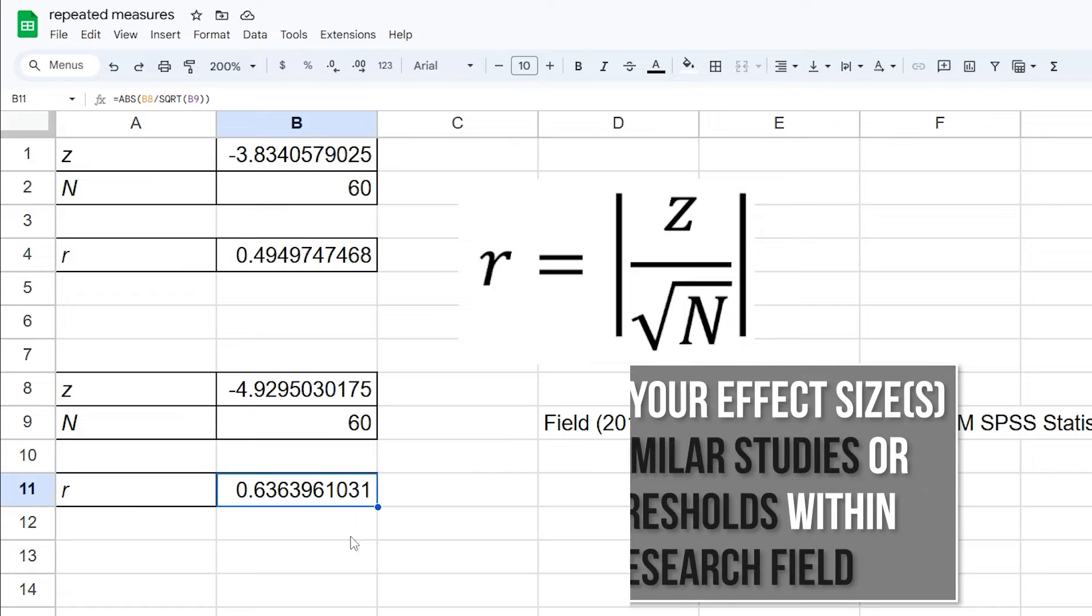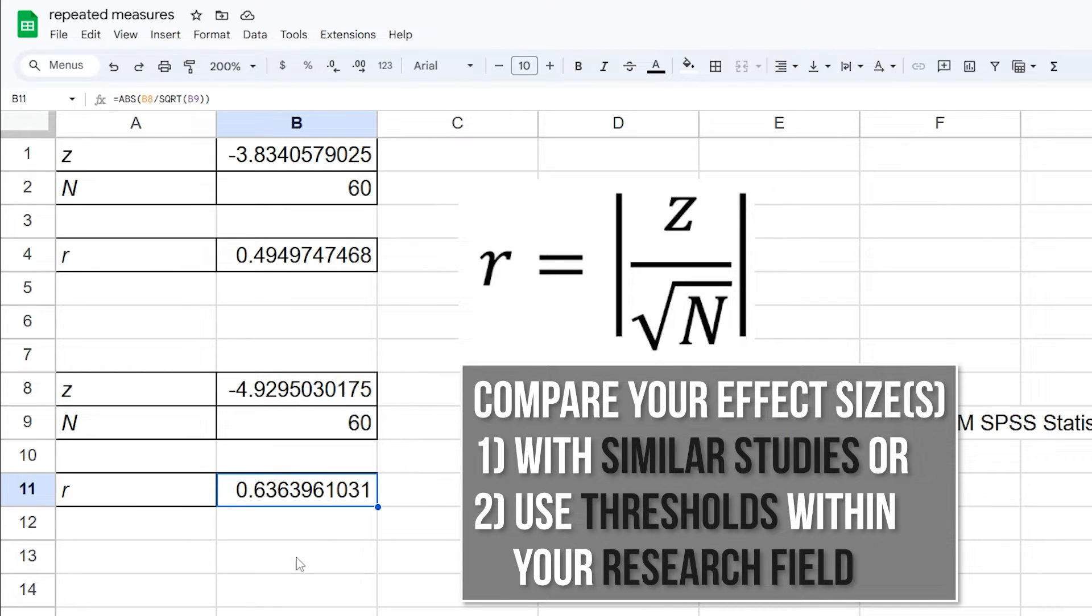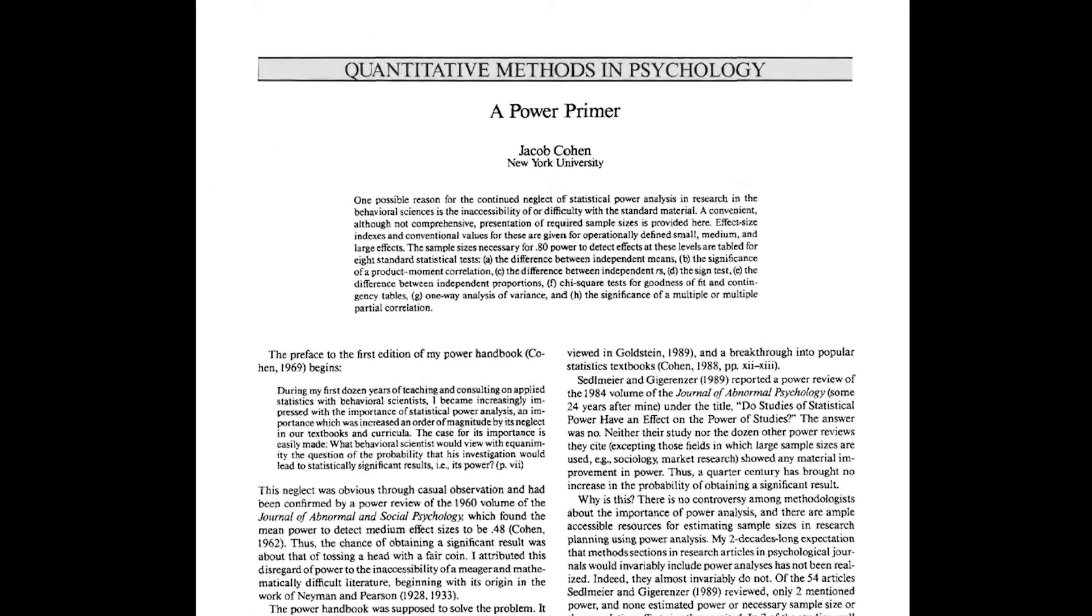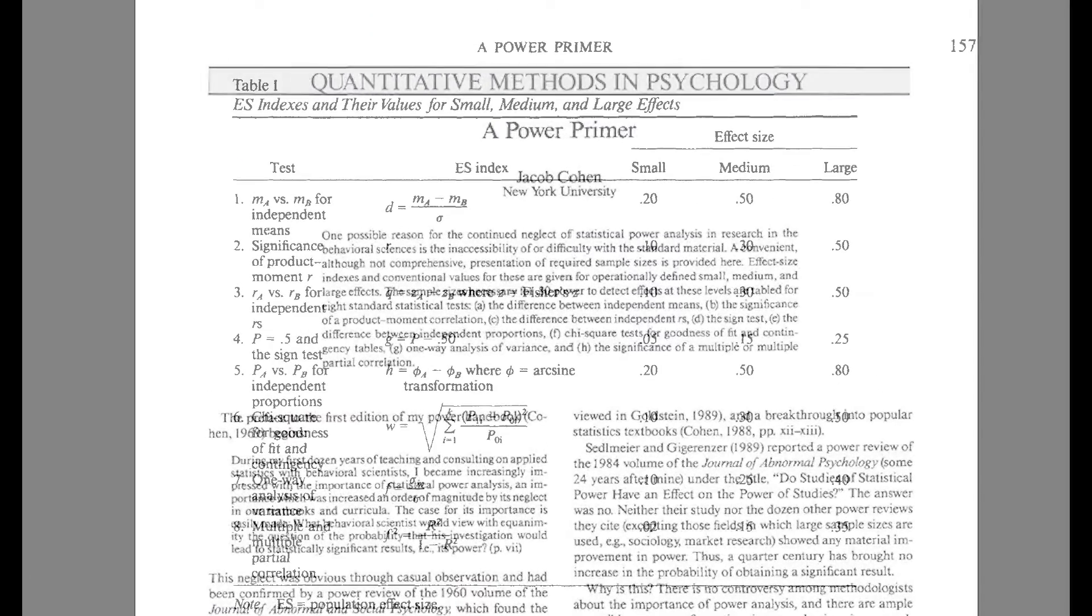If similar studies in your research field exist, compare your effect sizes with the given ones. Ideally, those studies also discuss the choice of N. If no comparable study exists, use the common thresholds within your research field. If those are also non-existent, you can refer to Cohen's 1992 'A Power Primer.'